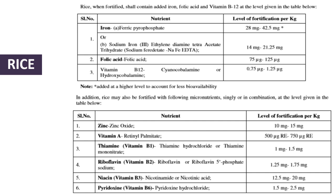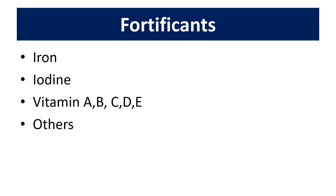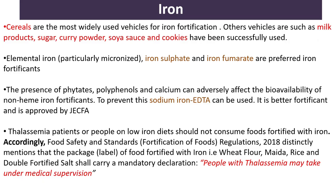The nutrient levels for fortification of rice per kg are listed on the slide. Wheat should mandatorily be fortified with nutrients, and the level of fortification is also mentioned — including iron, iodine, vitamins A, B, C, D3, and others.